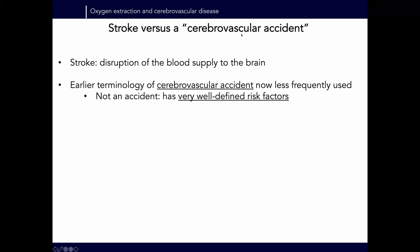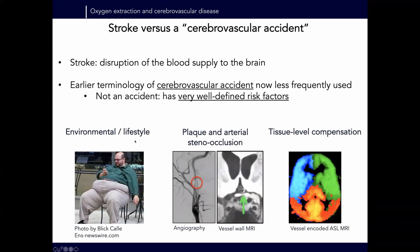For this talk I'll be discussing cerebrovascular disease and stroke. We used to think of stroke as a cerebrovascular accident, but that terminology isn't used anymore because it's not an accident — it has very well-defined risk factors, including environmental and lifestyle factors. From an imaging perspective, vascular patency and vessel wall imaging for plaque vulnerability are important. What we're really interested in is seeing how these macrovascular diseases impose changes at the tissue level — how the brain compensates, and studying what's going on at the tissue level in response to these factors.